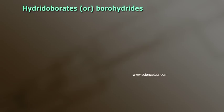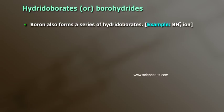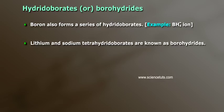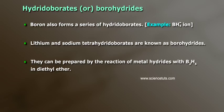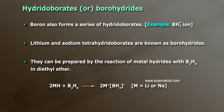Hydroborates, or borohydrides: boron also forms a series of hydroborates, for example the BH4− ion. Lithium and sodium tetrahydroborates are known as borohydrides. They can be prepared by the reaction of metal hydrides with B2H6 in diethyl ether: 2MH + B2H6 gives rise to 2M[BH4], where M is Li or Na.